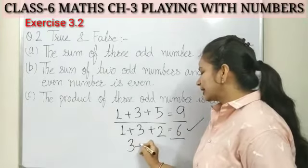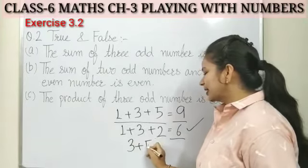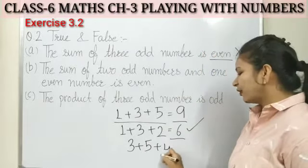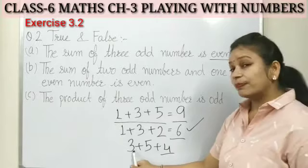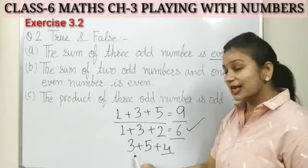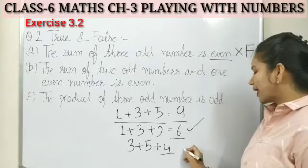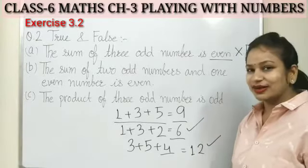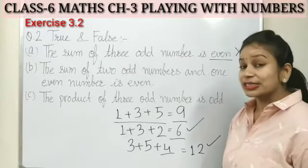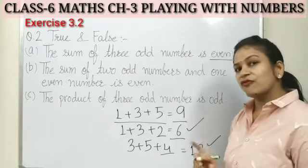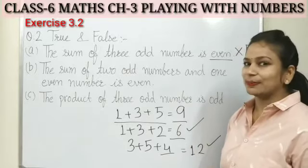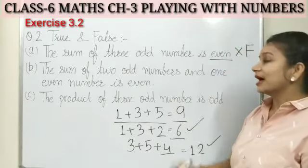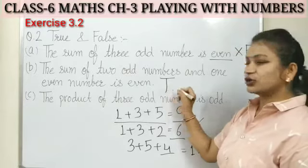Let's verify with another example. Two odd numbers: three plus five. And we add one even number four. Then five plus three is eight, and eight plus four is twelve. Here also the result is an even number. So when we add two odd numbers and one even number, the result will always be even. This statement is true.